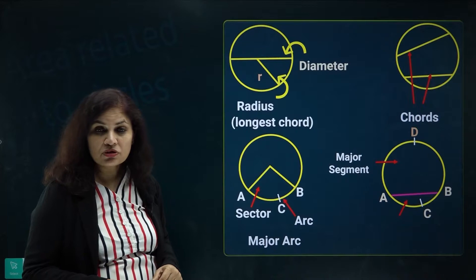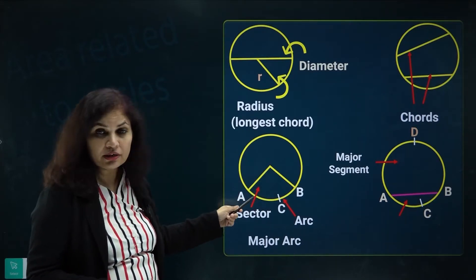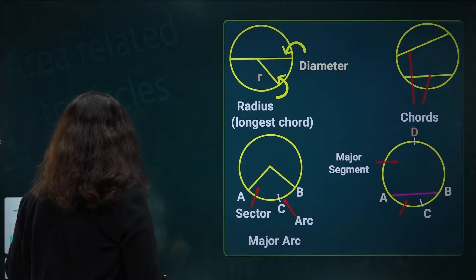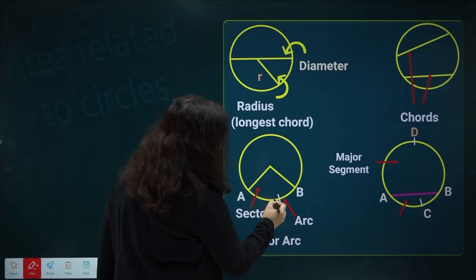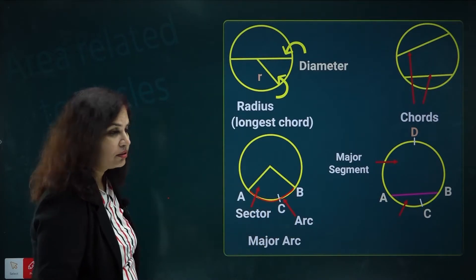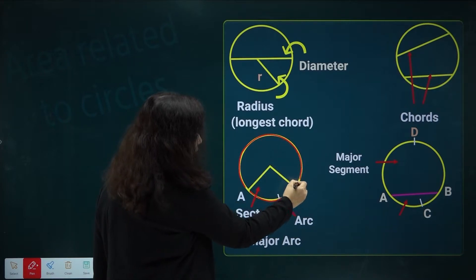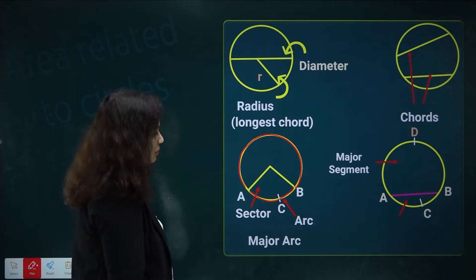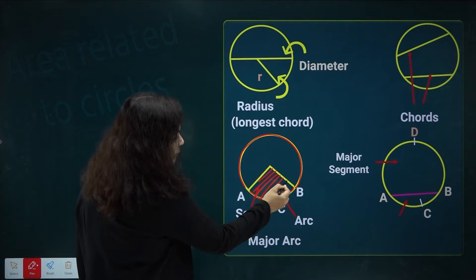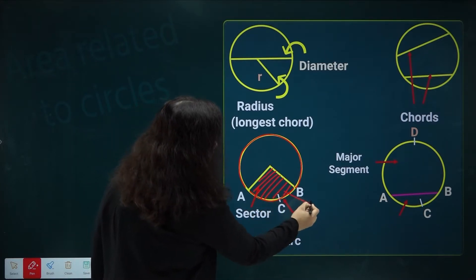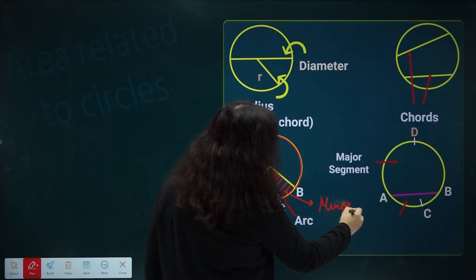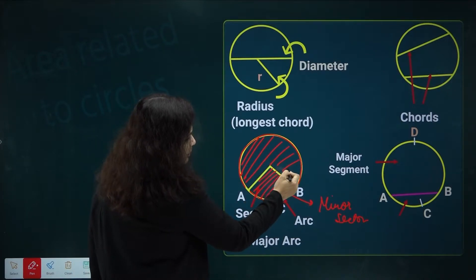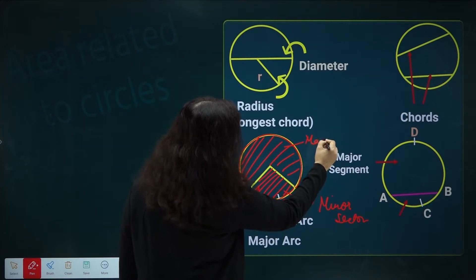The smaller region formed by the minor arc and two radii is the minor sector. The larger arc is the major arc, and the region formed by a pair of radii and the major arc is known as the major sector.